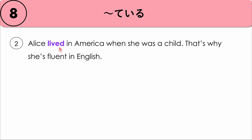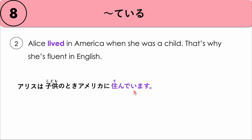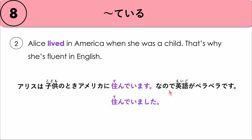Another example: Alice lived in America when she was a child, that's why she's fluent in English. People are talking about Alice and her ability to speak fluent English. アリスは 子供の時 アメリカに 住んでいます — she lived in America. We can say 住んでいました; if it's related to the current situation, we can use the ている form. Followed by なので 英語が ペラペラです — that's why she is now fluent in English. アリスは 子供の時 アメリカに 住んでいます なので 英語が ペラペラです.